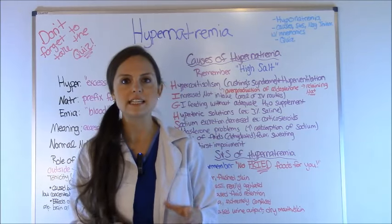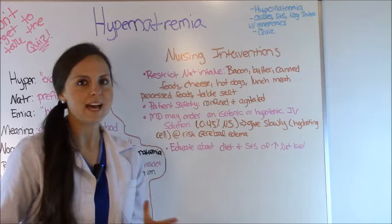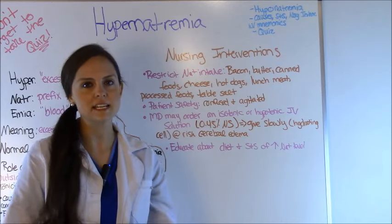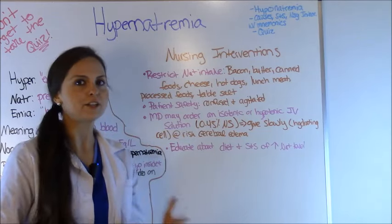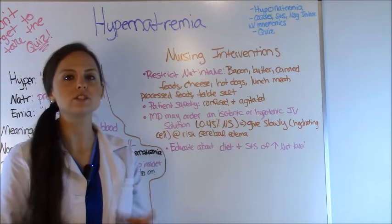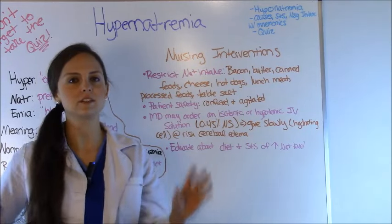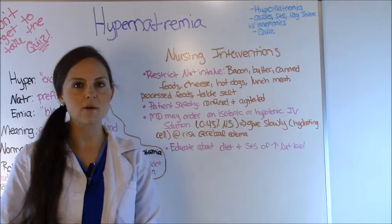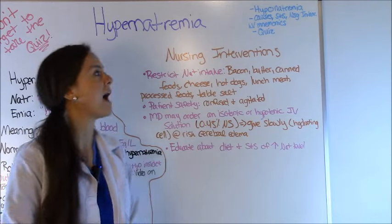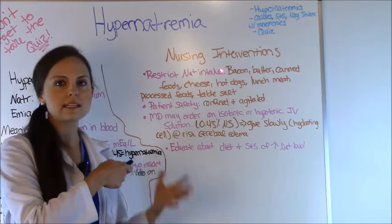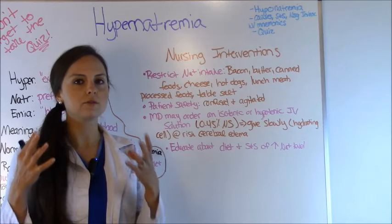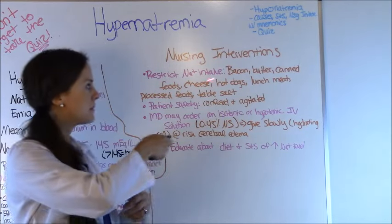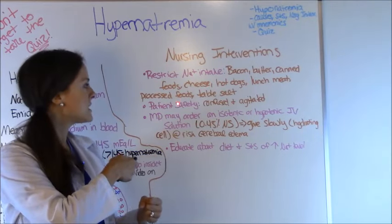Now let's talk about nursing interventions. First, you want to restrict the patient's sodium intake — they already have a lot of sodium on board, so you don't want them taking in any more. Know your high-salt foods because test questions will list foods and ask which one the patient should not have. High-sodium foods to highlight include bacon, butter, canned foods — which is tricky because canned corn sounds healthy but is high in salt — cheese, hot dogs, lunch meat, processed foods, and table salt.